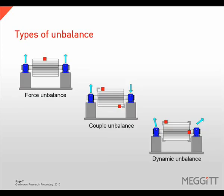There are three types of unbalance: force unbalance, couple unbalance, and dynamic unbalance. All three types exhibit vibration at 1 times rotational speed. To distinguish between them, we need to use phase readings.